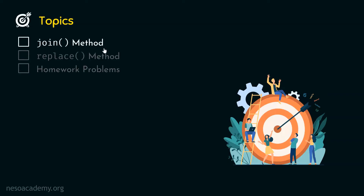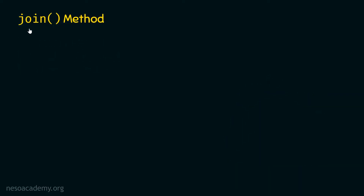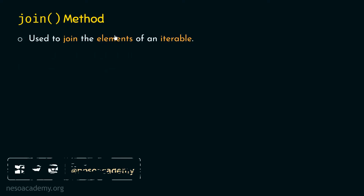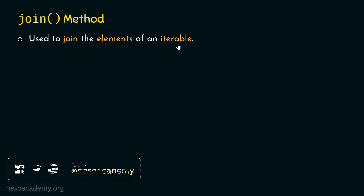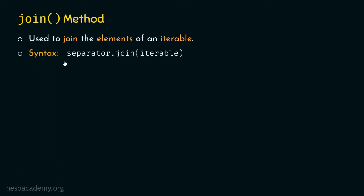Let's first understand what is the meaning of join method. Join method is used to join the elements of an iterable. With the help of join method, we can combine the elements of an iterable. We need to see the syntax of join method. The syntax is: separator dot join, within parentheses we need to provide the iterable.